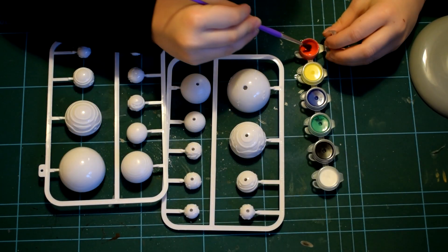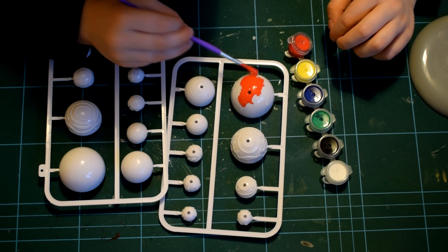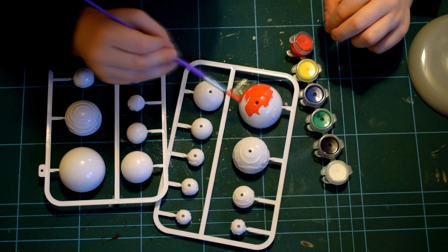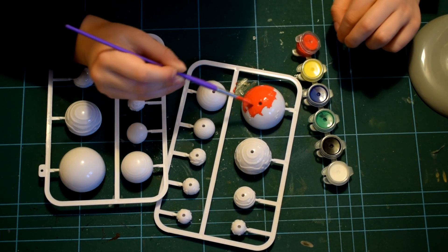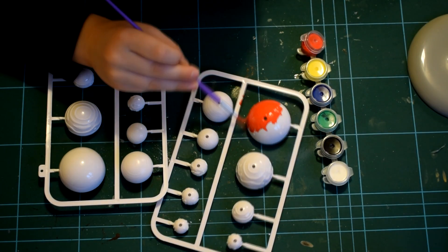The first step my young assistant chose to complete was to paint the sun red. The paints are water-based and look very similar to acrylic, but I'm not entirely sure they are.